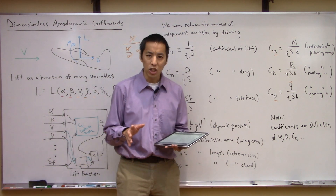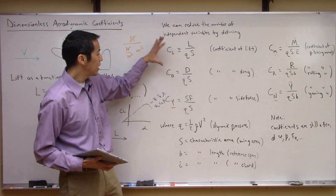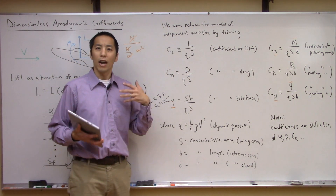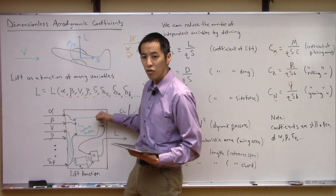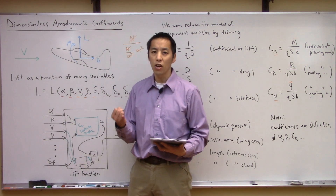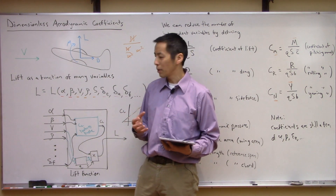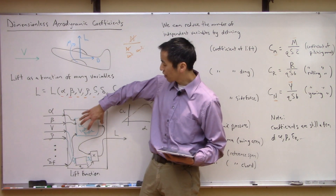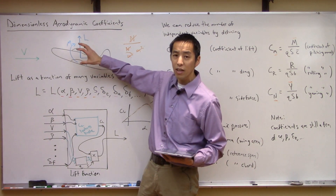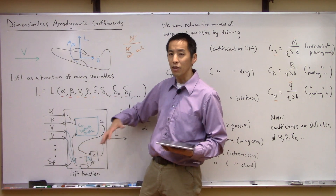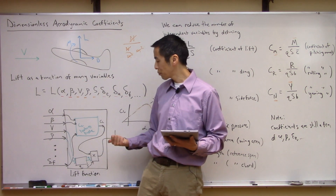Quick discussion on dimensionless aerodynamic coefficients. The one thing to take away is these are the definitions of what they are. Why we care about them is because we need to build this aerodynamics block, which is going to be critical for simulating our aircraft. The 95% of the complexity of how your aircraft model behaves is in this block — this is the complicated part. This is the thing that changes if you have a 787 or an F-14, because the aerodynamics are different due to different geometry, control surfaces, and so on.